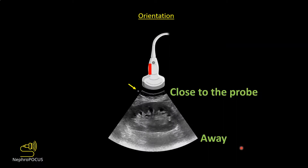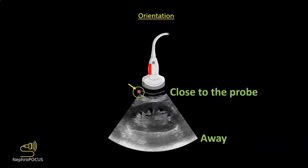Regarding image orientation, whatever organ you are imaging, the principles remain the same. Structures closer to the probe appear at the top of the image; structures farther away appear at the bottom. Every image has a screen indicator or orientation marker — for example, a 'P' for Philips. This corresponds to the orientation marker on the probe. For a kidney ultrasound, holding the probe with the marker toward the patient's head means the left side of the screen is superior and the right is inferior, allowing you to localize lesions to the upper or lower pole.